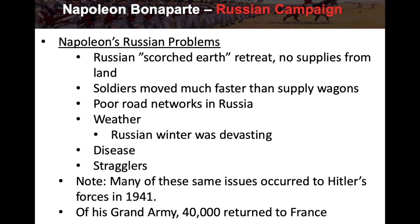Napoleon's Russian problems: number one, the Russian scorched earth retreat meant no supplies from the land. Number two, soldiers were moving much faster than their supply wagons — an army can only move as fast as its supplies, and outrunning them leaves an opportunity for the enemy to cut supply lines. There were also poor road networks in Russia, devastating winter weather, disease, and stragglers — soldiers falling behind due to sickness, cold, or exhaustion. They were severely stretched out.